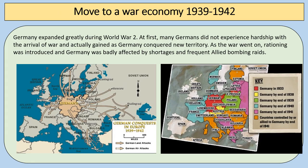Germany actually expanded greatly during the Second World War, as you can see from these maps. At first, many Germans did not actually experience that much hardship with the arrival of war, and it actually gained as Germany conquered new territory and the economic benefits that it brought. But as the war went on, rationing was introduced, Germany was badly affected by shortages and then frequent Allied bombing raids. There was an increase in opposition to the Nazi regime, and a huge turning point was Goebbels' total war speech on the 18th of February 1943.